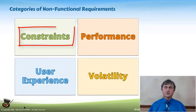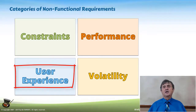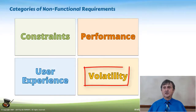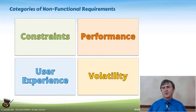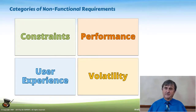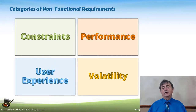You now have examples of constraints, performance, user experience, and volatility — four main categories of non-functional requirements that we have to take care of. Ultimately, if I'm trying to define the requirements, user stories, and features, I need to figure out all of the things from these categories that are going to impact that particular item.